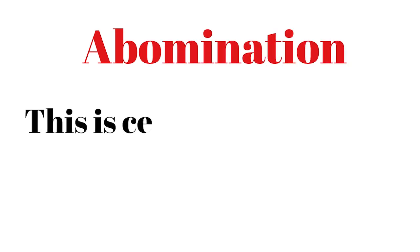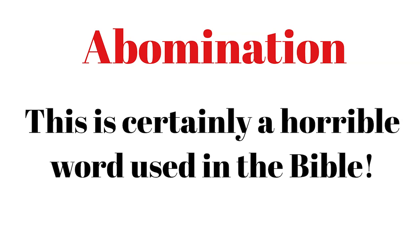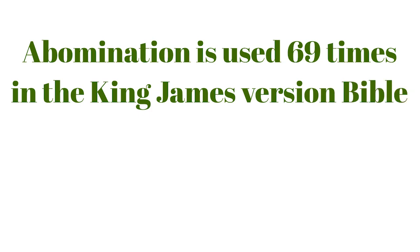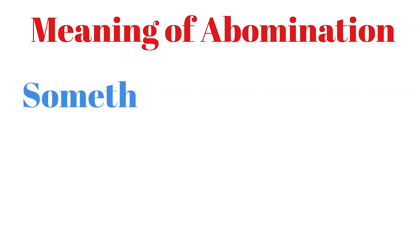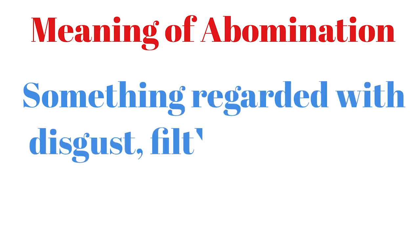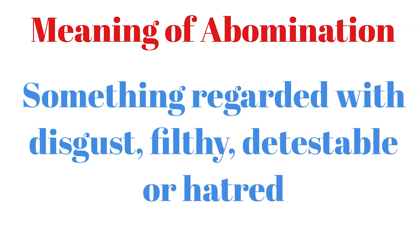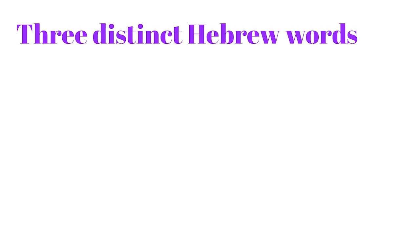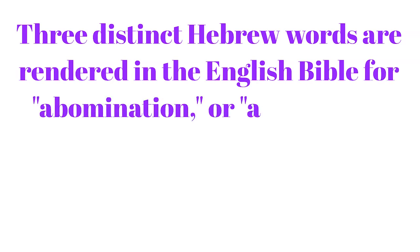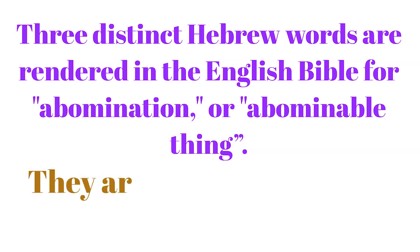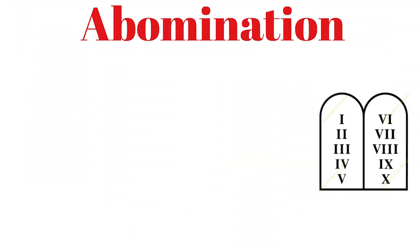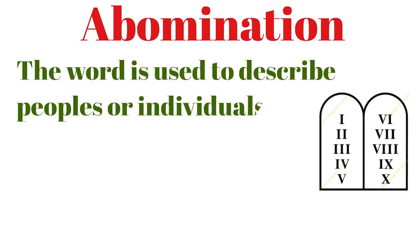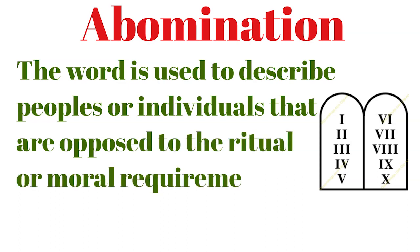Abomination — this is certainly a horrible word used in the Bible. Abomination is used 69 times in the King James Version Bible. The meaning of abomination is something regarded with disgust, filthy, detestable, or hatred. Three distinct Hebrew words are rendered in the English Bible for abomination or abominable thing, and they are used symbolically of sin in general. The word is used to describe peoples or individuals that are opposed to the ritual or moral requirements of God.